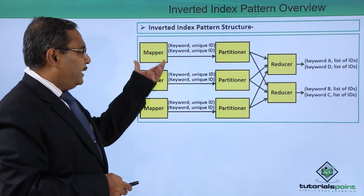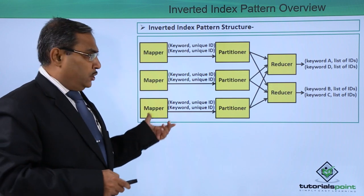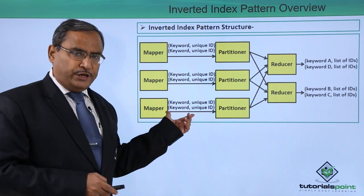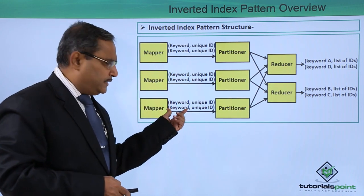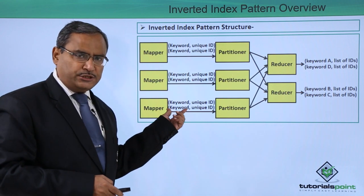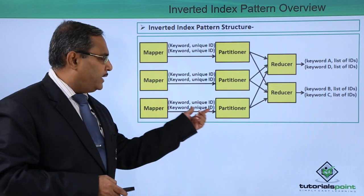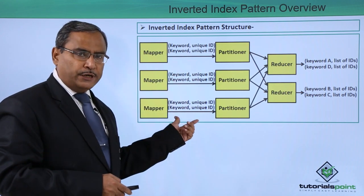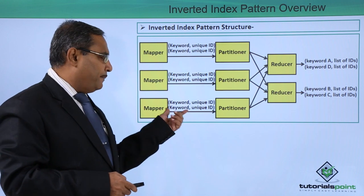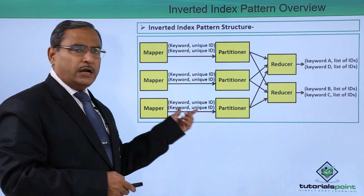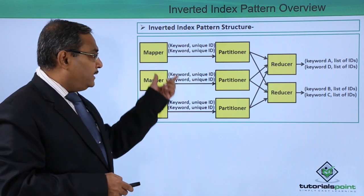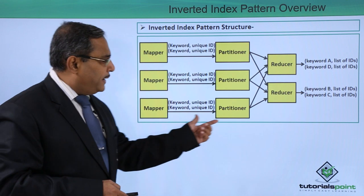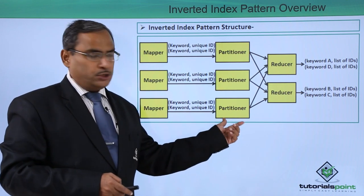Here we are having the respective mappers. These mappers will produce key-value pairs — that is, the keyword and the unique ID. In this way it is producing key-value pairs where we have the keyword comma unique ID, and this particular output will be made available to the partitioner.